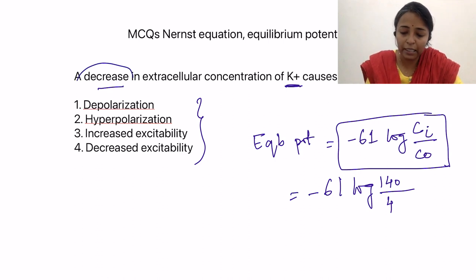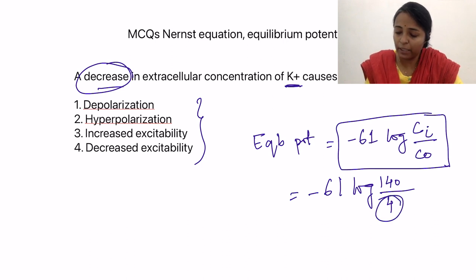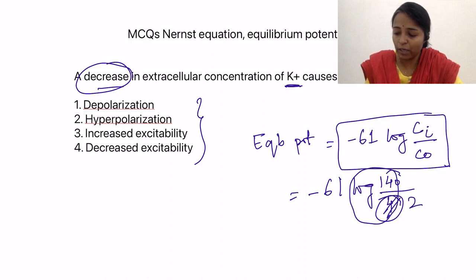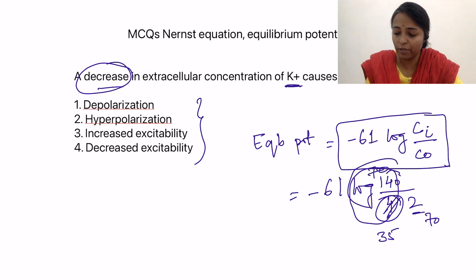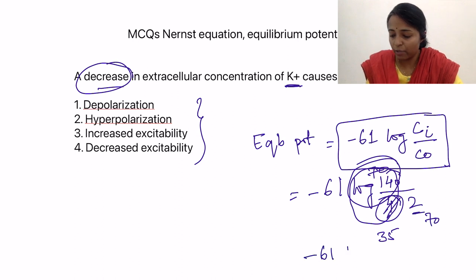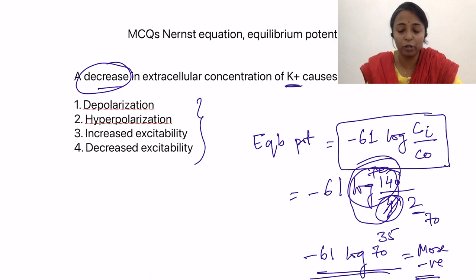A decrease in extracellular concentration of potassium means the denominator decreases — say from 4 to 2. Before, the ratio gave log 35; now it gives log 70, which is a higher value. So we get minus 61 log 70, which goes towards a more negative value. That means it is going to lead to hyperpolarization. So that is the answer.